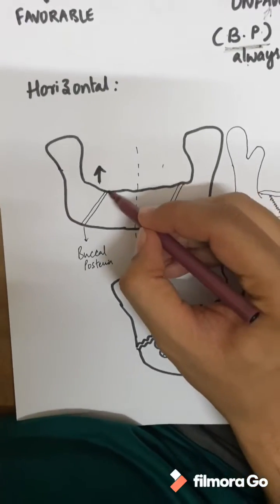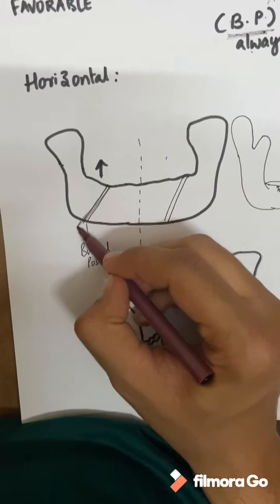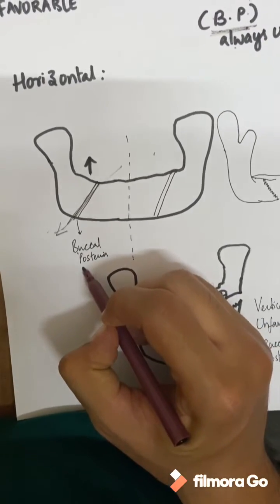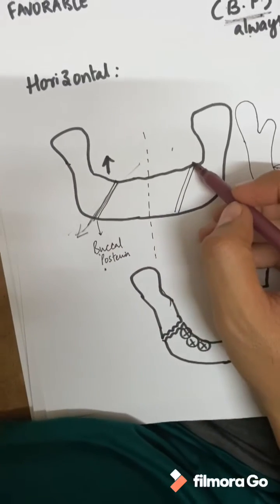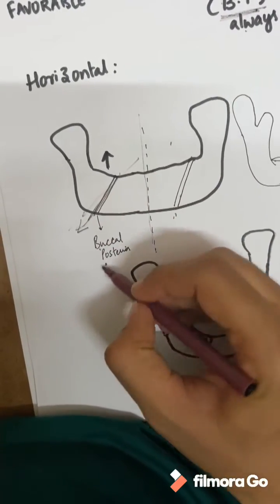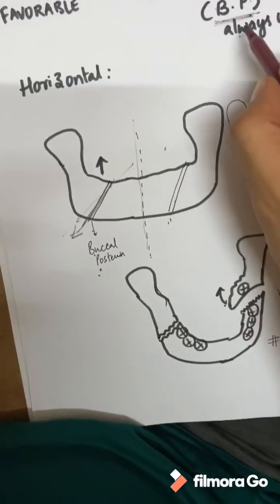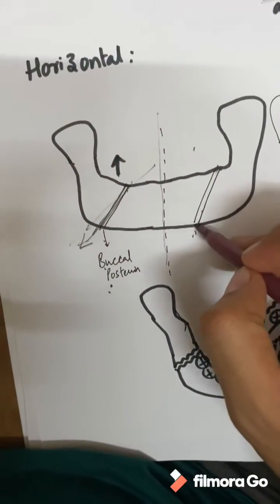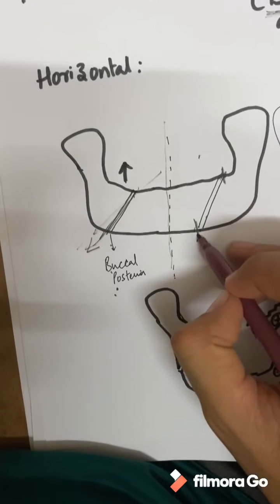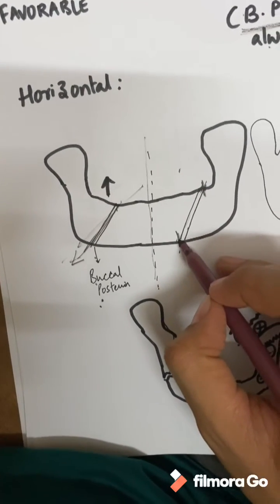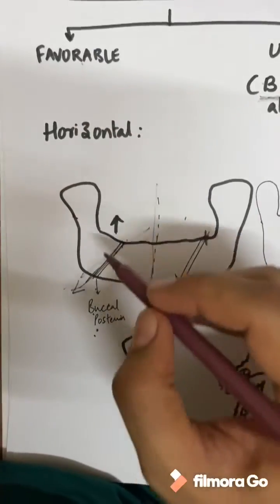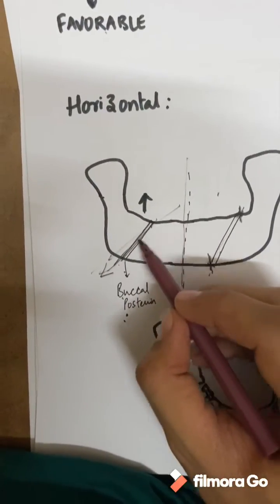If the fracture line from the buccal region is running posteriorly, then this is an unfavorable fracture. If the buccal side is anterior — that is, toward the midline — buccal posterior is always unfavorable. If the buccal side is anterior and the fracture line is going back toward the front and midline, that is buccal anterior, which is a favorable fracture. If the fracture line is going to the posterior on the buccal side, it is an unfavorable fracture.